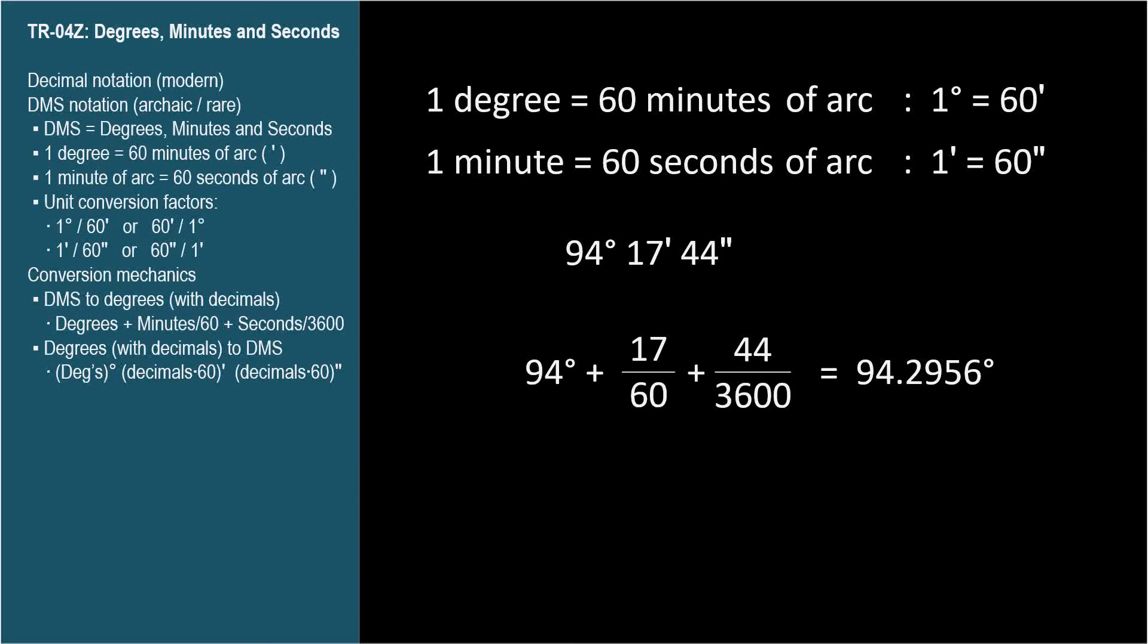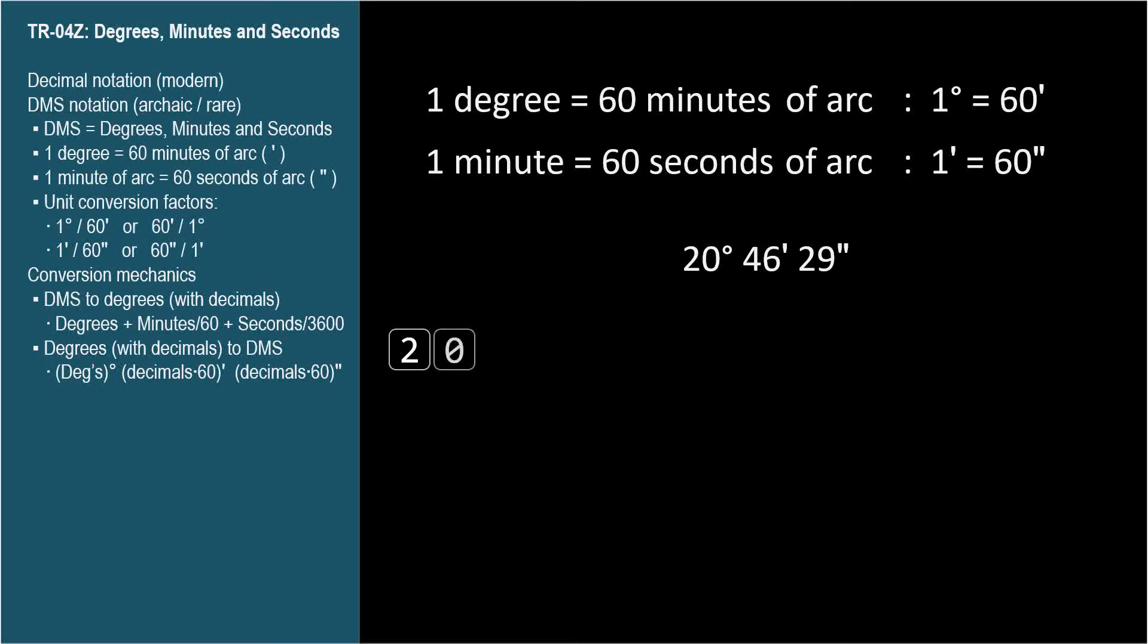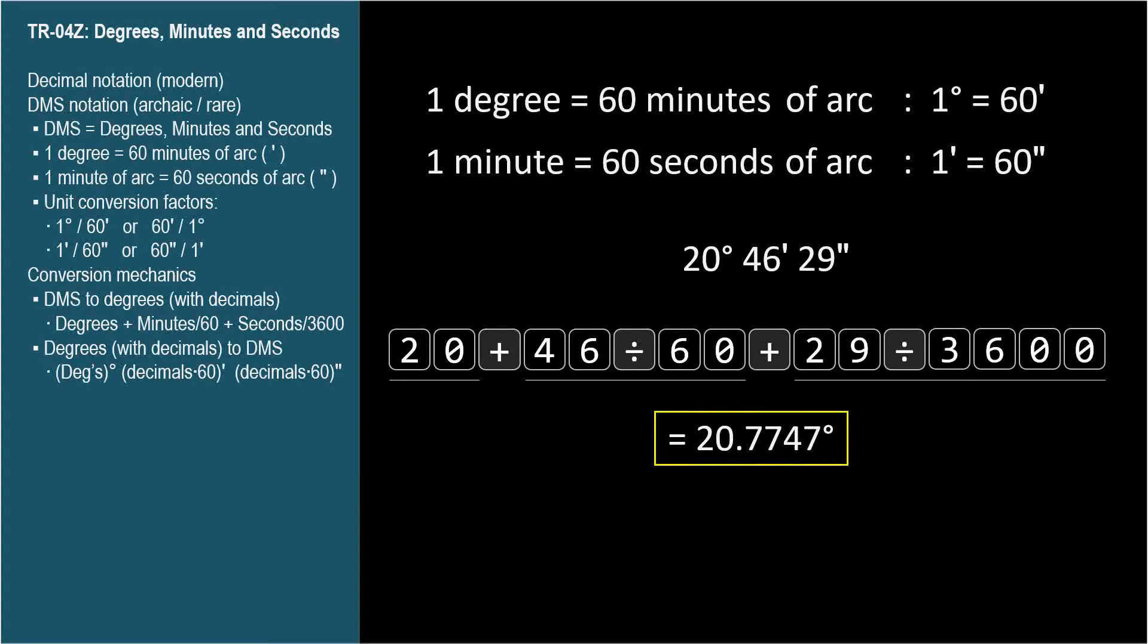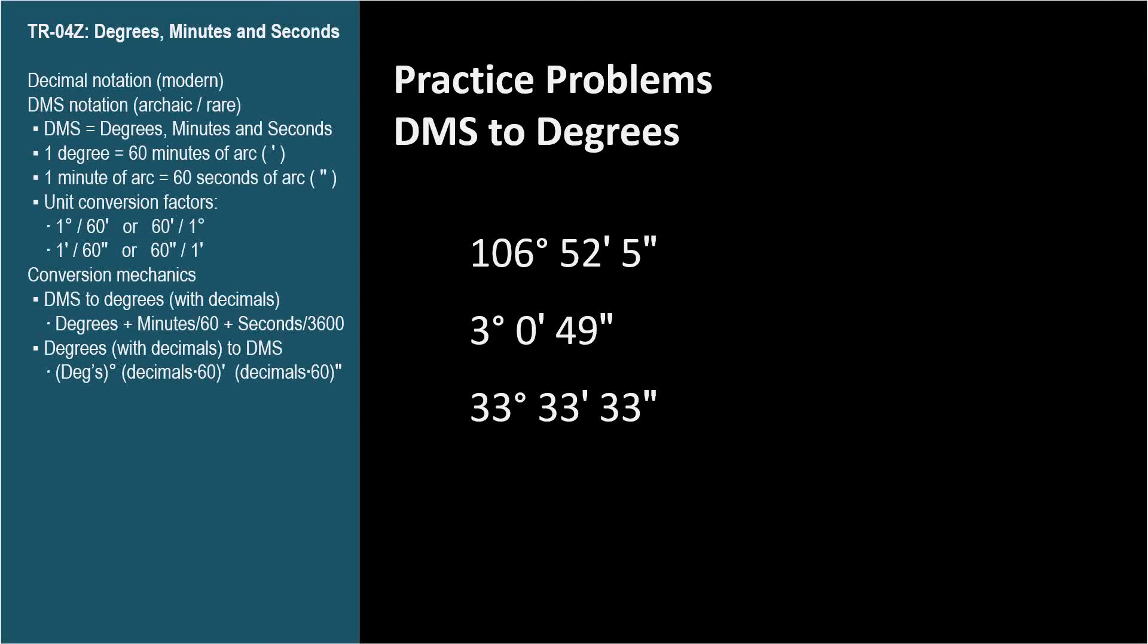Let's do another. Let's convert 20 degrees, 46 minutes, and 29 seconds to decimal. With a little practice, you can do it on a calculator on one line. 20 plus 46 divided by 60, plus 29 divided by 3600. 20.7747 degrees. Here are three more you can pause and try on your own.